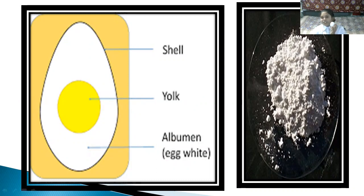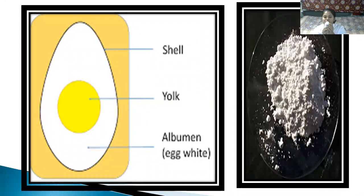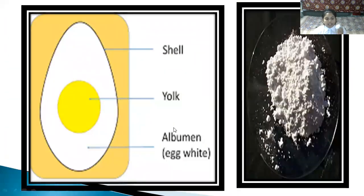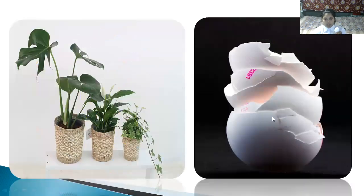In the second picture we are observing calcium carbonate. This eggshell is made up of calcium carbonate, which is a chemical substance. So plants absorb calcium carbonate.